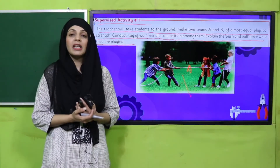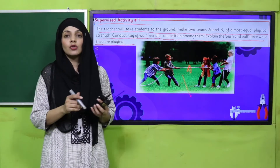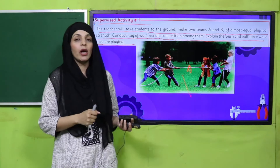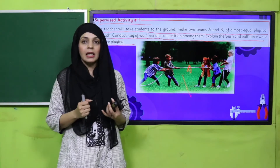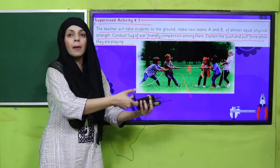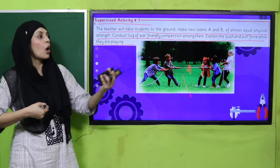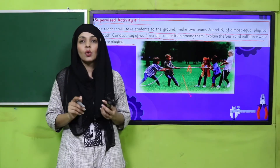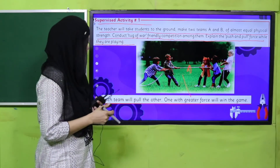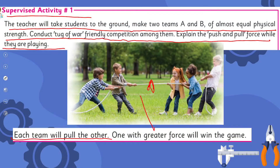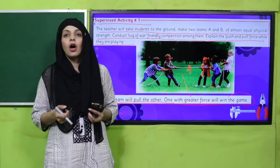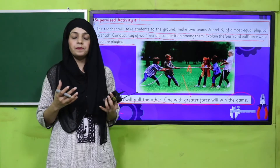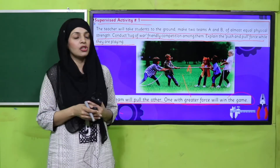The teacher will explain the push and pull concept during the game. When you are pulling the rope, you are pulling the other team towards you from the other side. Each team will pull the other. The team with greater force will win the game — jis team ka zyada force hogi, woh jeet jayegi.